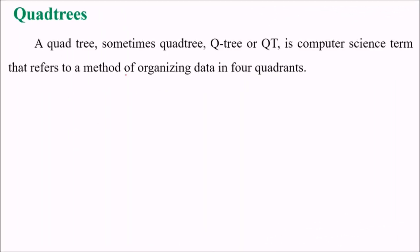We are discussing quadtrees. A quadtree, sometimes called Q-tree or QT, is a computer science term that refers to methods of organizing data in four quadrants.